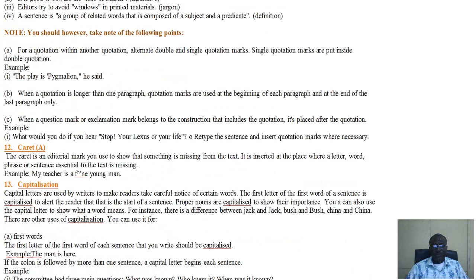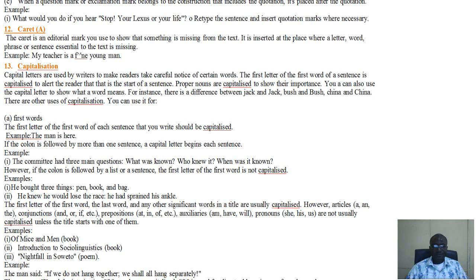We come to the 12th punctuation mark, which is called the caret. The caret is an editorial mark. In other words, when you're writing and you just discover that there have been some omission, what you do is that you put a caret. And the caret is put, it's just an upside-down V. You write a V upside down to show that something is missing from the text. You can similarly see that in the slide.